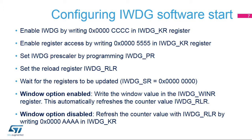Two options are now available: enable or disable the IWDG window option. To enable the window option, write the window value in the IWDG WINR register. Otherwise, refresh the counter by writing 0x0000AAAA in the key register to disable the window option.